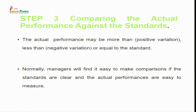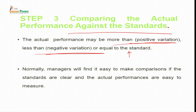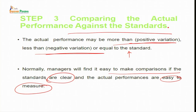Step three is comparing the actual performance against the standard. At this stage, actual performance is evaluated with the help of the standard set earlier, by comparing with the aim of knowing performance variations. Actual performance may be more than the standard — a positive variation — or less than the standard — a negative variation — or equal to the standard. Managers will find it easy to make comparisons if standards are clear and actual performance is easy to measure.